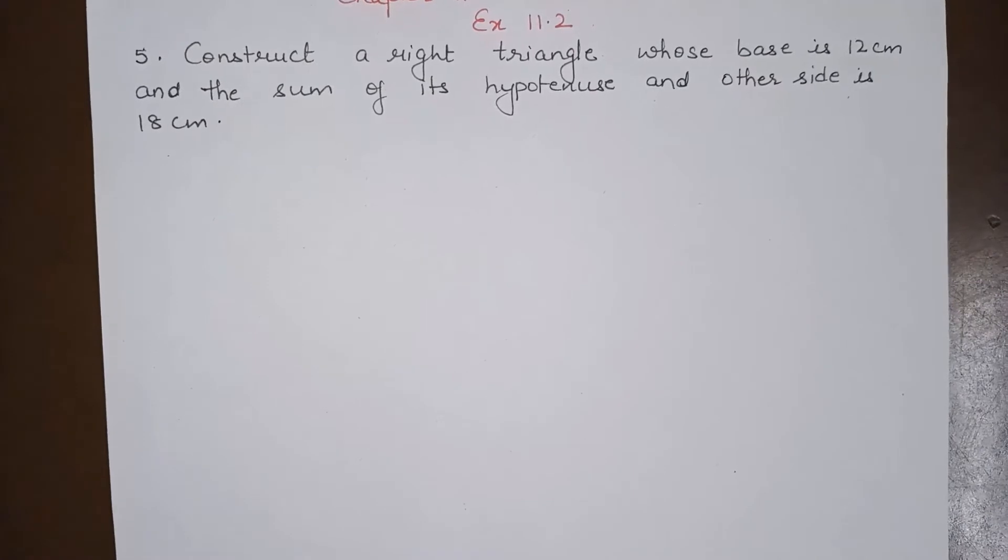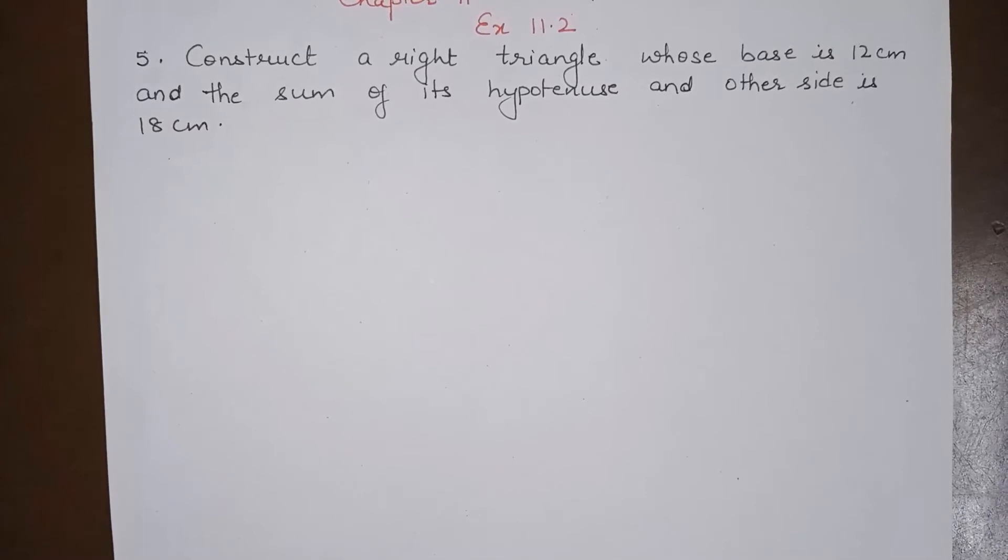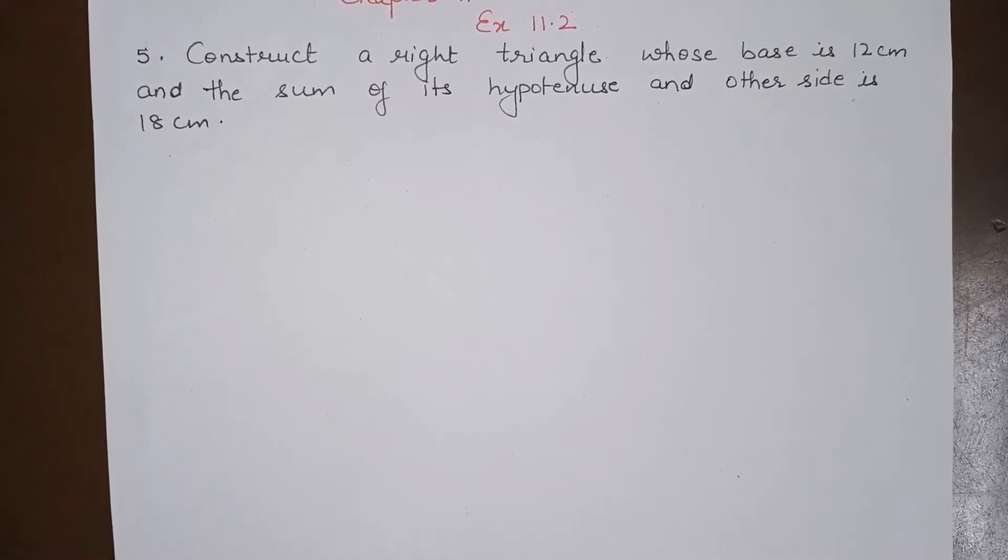Construct a right triangle whose base is 12 cm and sum of its hypotenuse and other side is 18 cm.